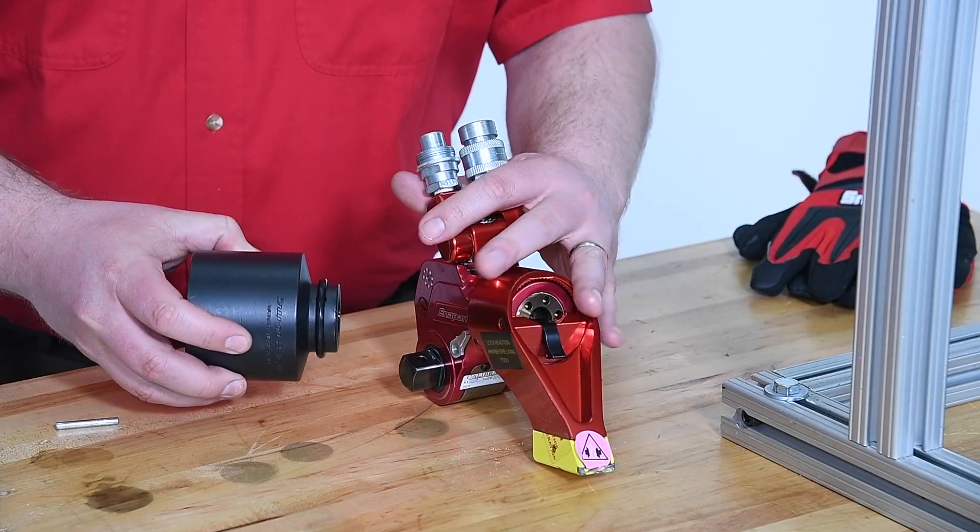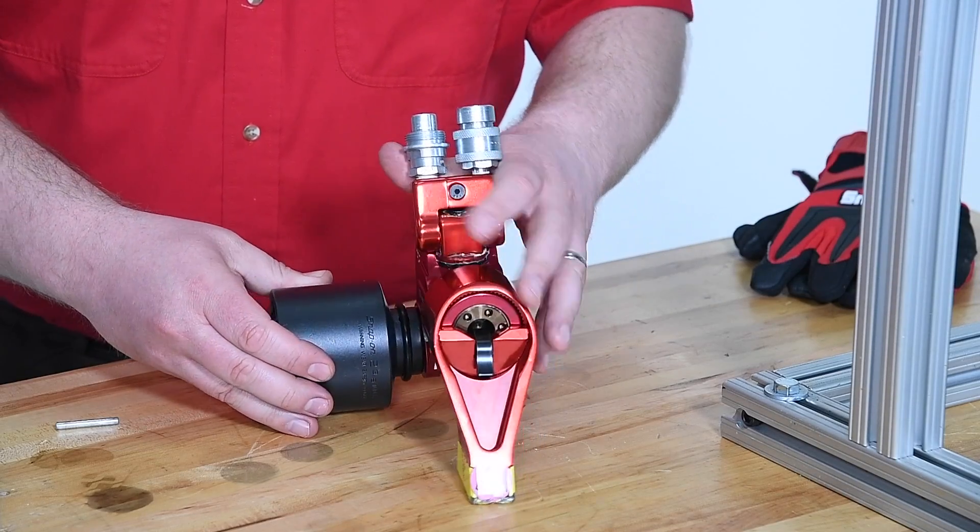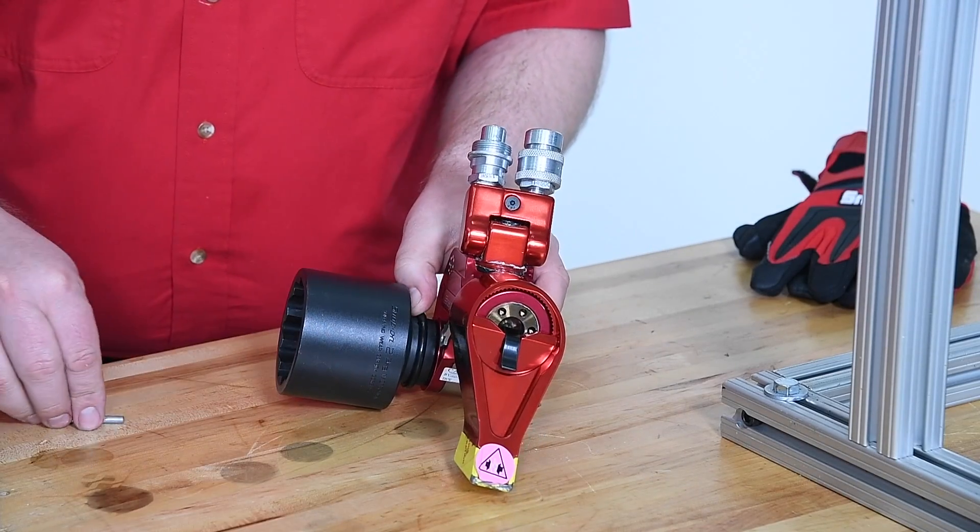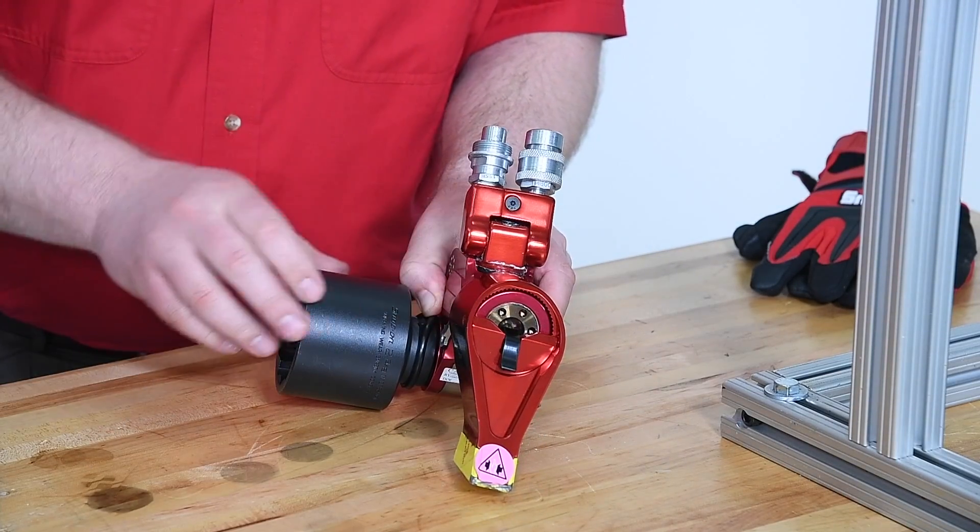To operate the wrench, first choose the appropriate sized impact socket. Always use a retaining pin and ring to secure the socket.